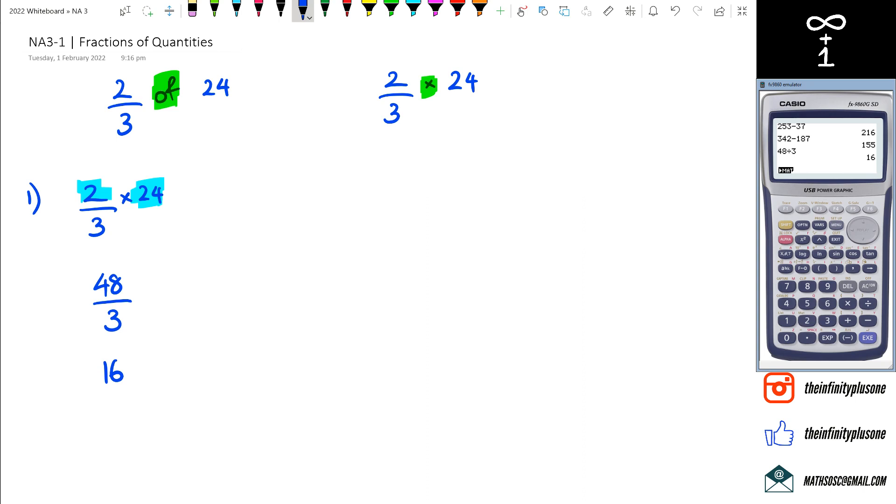That's one way of doing it. Second method: two-thirds times 24 is the same thing as saying two lots of one-third of 24. I've broken the two-thirds into two lots of one-third times 24. One-third of 24 is the same as two times 24 divided by 3.